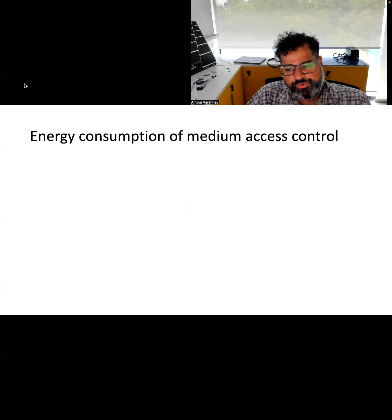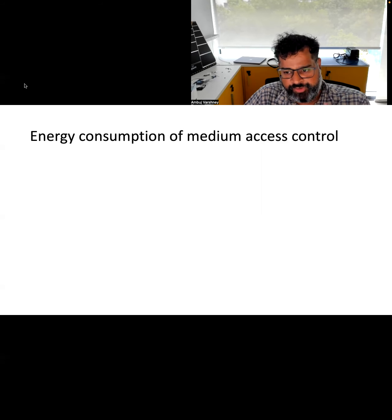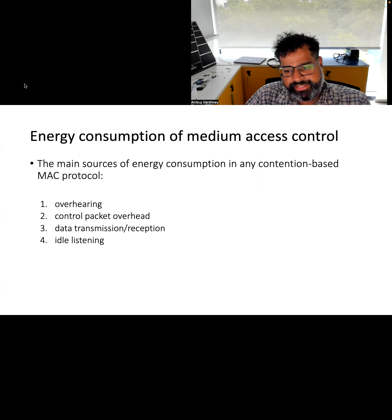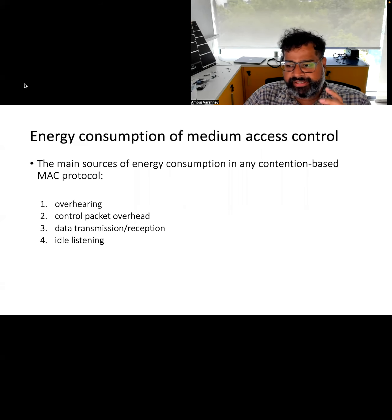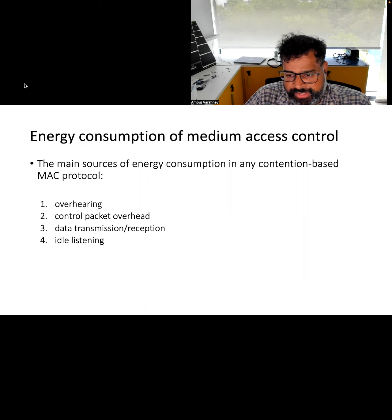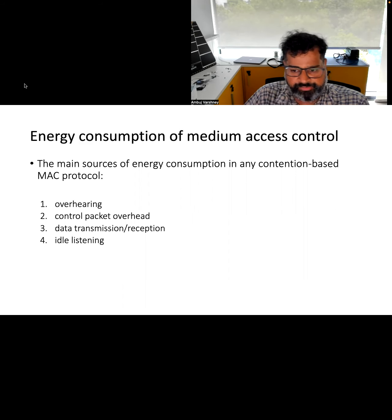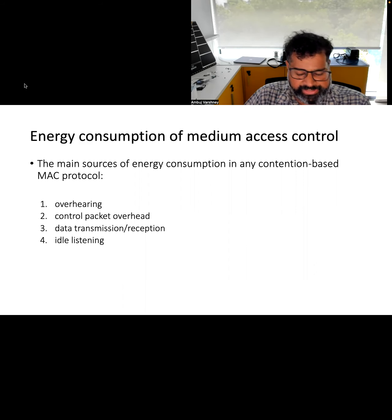To answer this question, let's look at the main sources of power consumption in a contention-based MAC protocol for IoT devices. First, there is overhearing transmissions — those not meant for the device but happening over the air. Second, the overhead of sending control packets such as RTS, CTS, and acknowledgements. Third, data transmission, reception, and idle listening, which are the active modes. Idle listening occurs even when there is no traffic over the air.